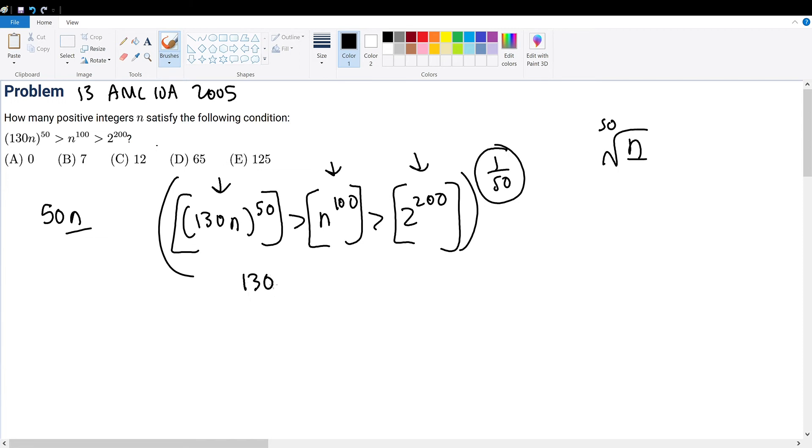This becomes 130n is greater than n squared is greater than or equal to the fourth power, or 2 to the fourth power. Now 2 to the fourth power is the same thing as 16. So we have simplified this giant mess into this very easy and nice looking inequality.